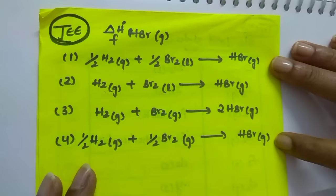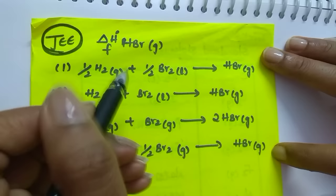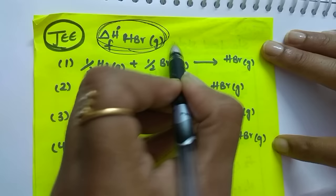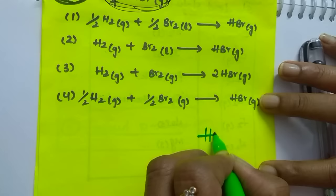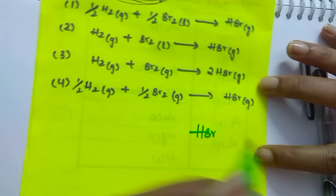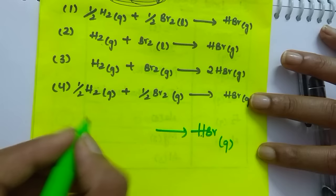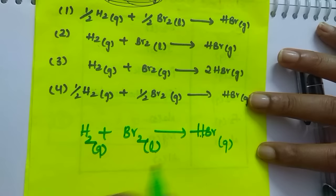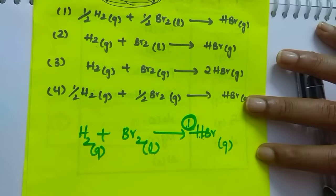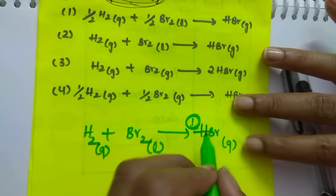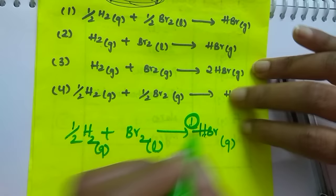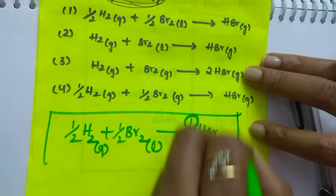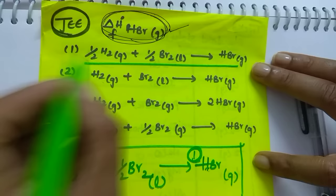JEE question: what is the correct expression for the standard enthalpy of formation of HBr? HBr formation — write HBr(g) on the product side. Elements are H₂ and Br₂. H₂ is gaseous; Br₂ is in liquid state. Balance for one mole: take ½ H₂ + ½ Br₂(l) → HBr(g). This is the correct equation. A wrong option would show Br₂ in gaseous state instead of liquid.